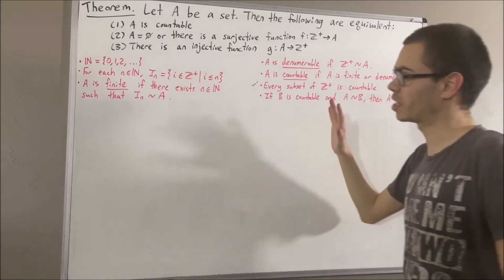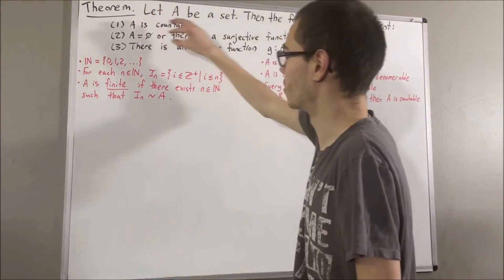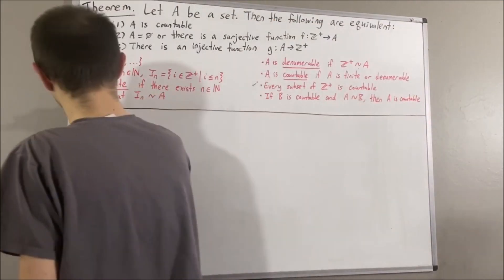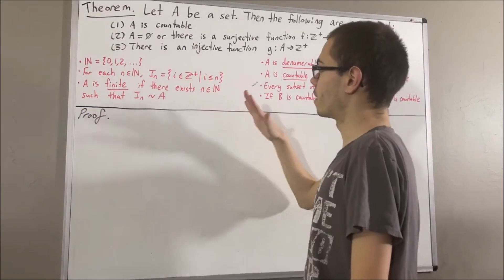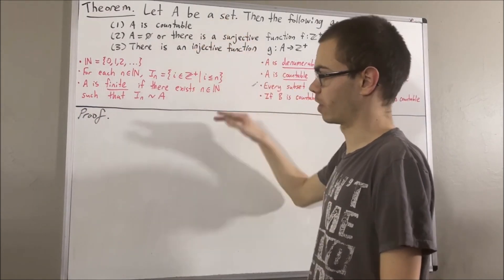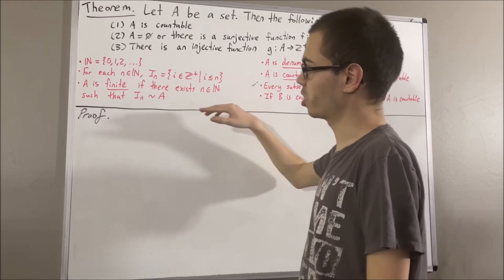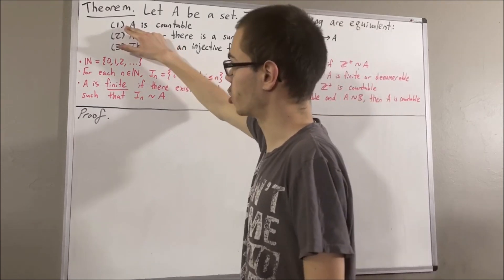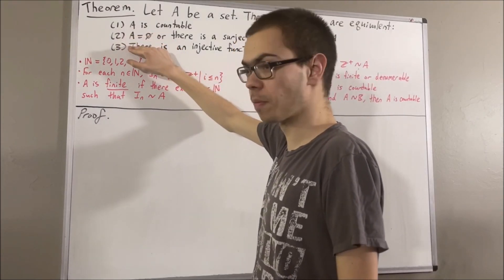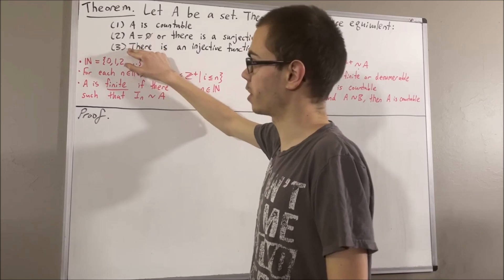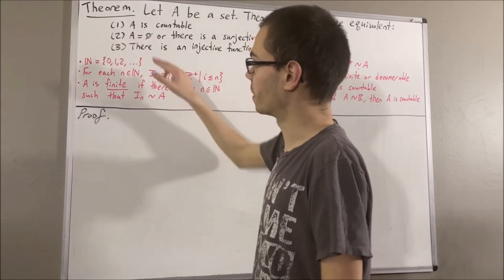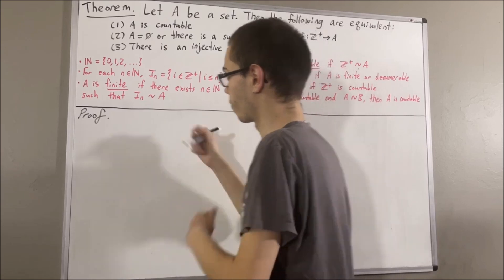Now let's get into proving this theorem. We're trying to prove that all three of these statements are equivalent. To prove that, we're going to prove: if 1 is true then 2 is true, if 2 is true then 3 is true, and if 3 is true then 1 is true. Let's start out by proving if 1 is true, then 2 is true.